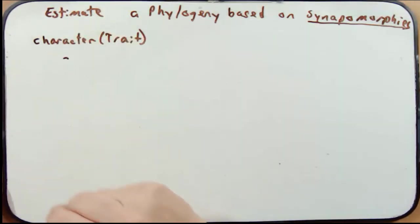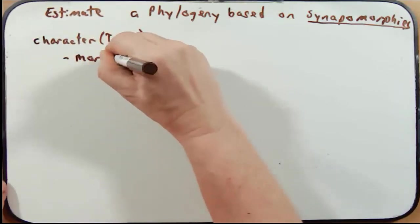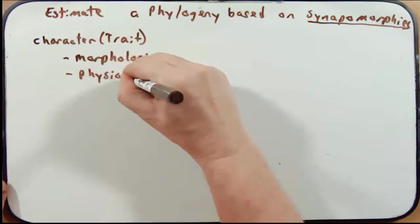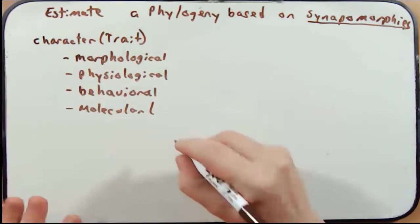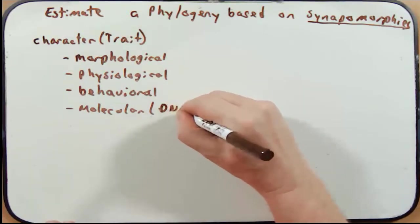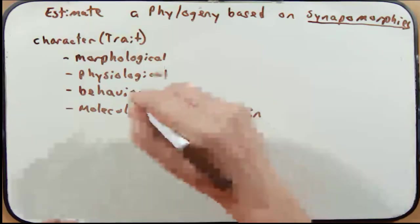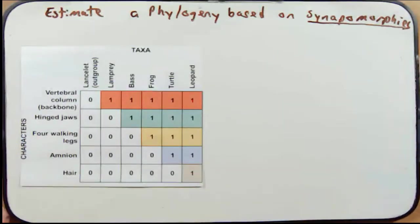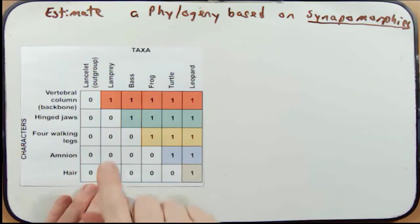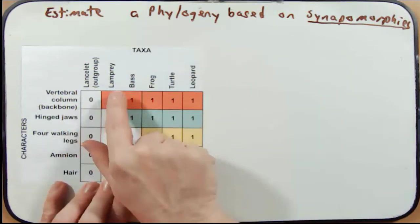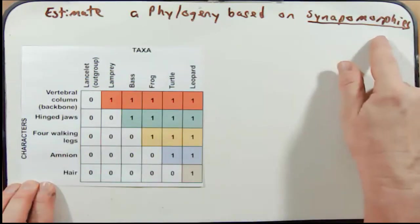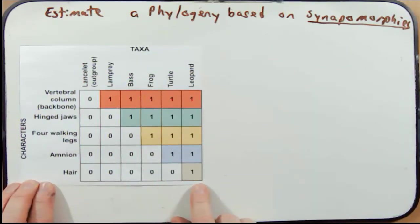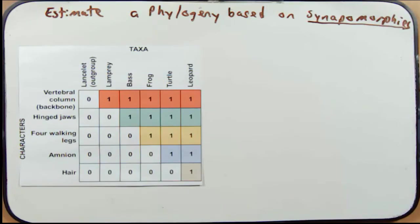Let's use synapomorphies and character information to estimate a phylogeny. To make this easier, here is a table showing different taxa we're studying: lancelets, lamprey, bass, frog, turtles, and leopards. The table also lists different characters that are going to define the synapomorphies. We're going to use these characters to build a phylogenetic tree and understand the phylogenetic relationship between these organisms.